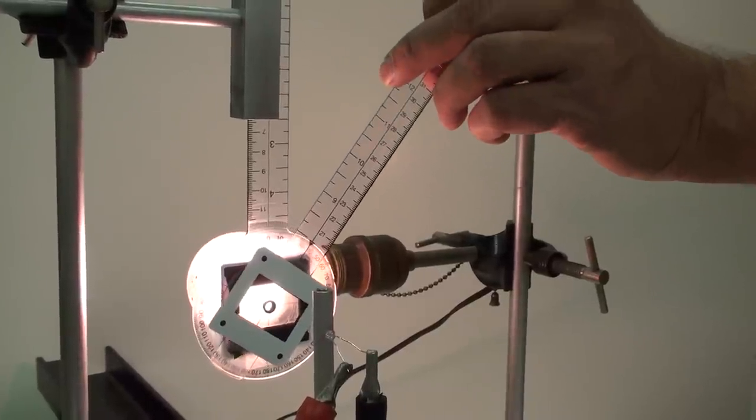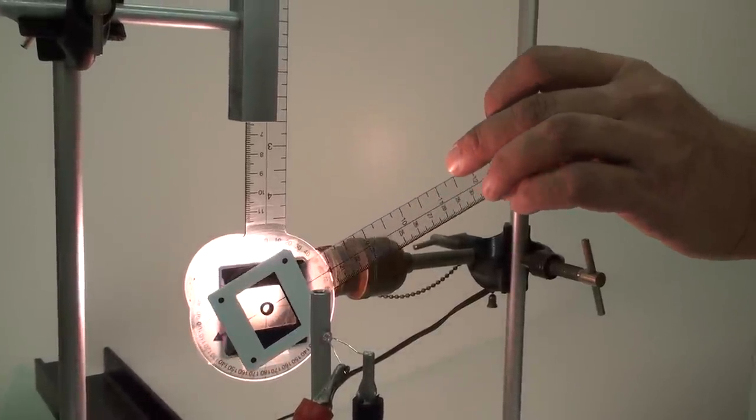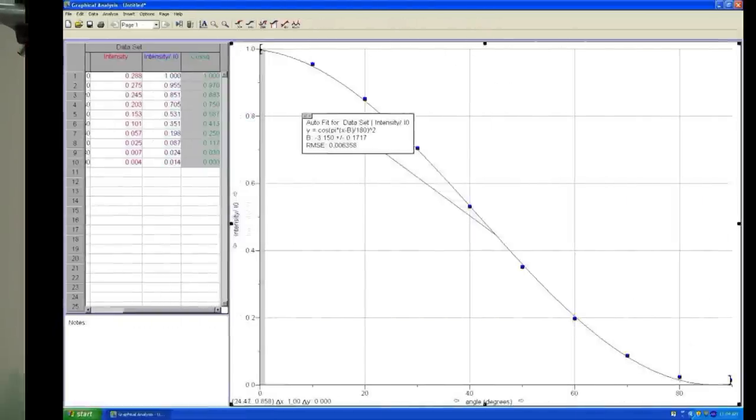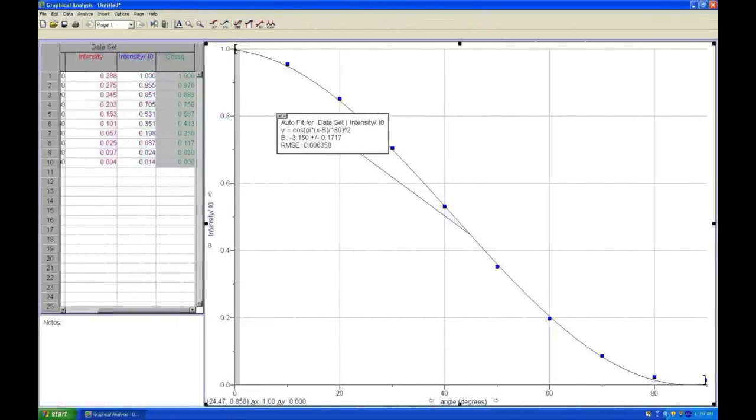Rotate the goniometer to tilt one polaroid relative to the other, and measure the intensity at zero, 10 degrees, 20 degrees, etc. through 90 degrees. Since you are interested only in the angular dependence of the transmitted intensity rather than the absolute intensities, divide all intensities by the maximum intensity obtained with the angle at zero.